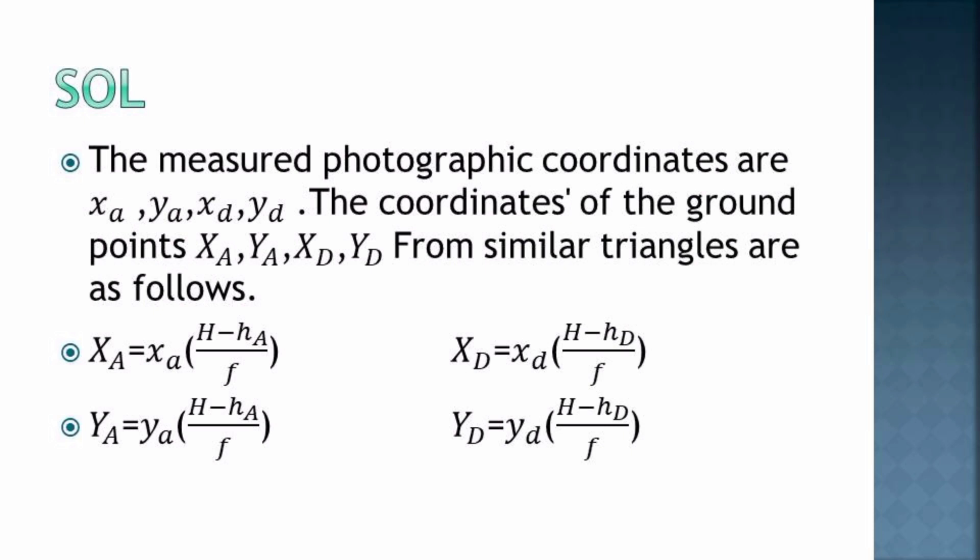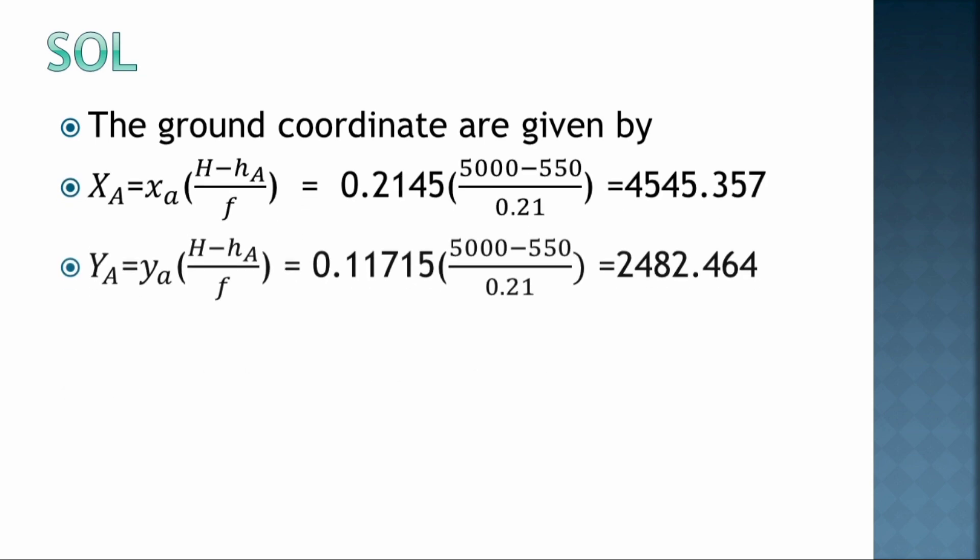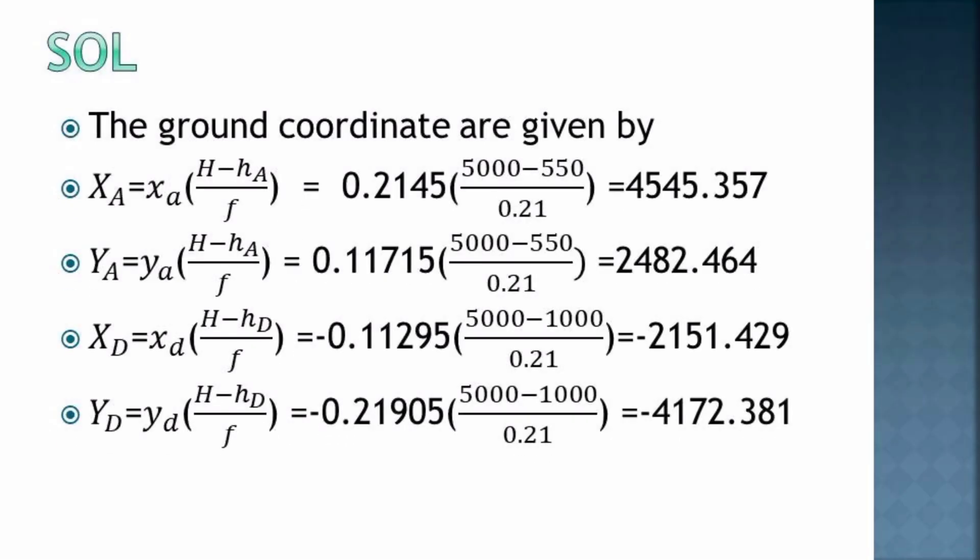Photographic coordinates are found in the image, the picture, and the coordinates of the ground are on the physical, tangible ground. From similar triangles we can get the following equations. Our first formula: X_A, the capital representing the ground coordinates, equals the photographic coordinates of A times (H - h_A) divided by f.